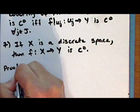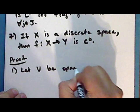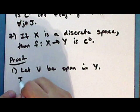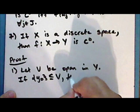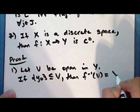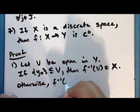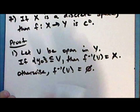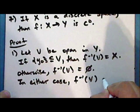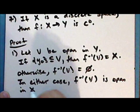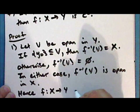Proof of the first statement: let V be open in the space Y. Then if the singleton containing the constant y-naught is a subset of V, then the inverse image of the open set V is the entire set X. Otherwise, the inverse image of the open set V is the empty set. In either case, the inverse image of the set V is open in the space X, and hence the constant function mapping X into Y is continuous.